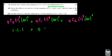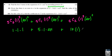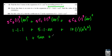5C1 is 5. 1 to the 4th is 1, times ax — because x to the 1 is just x. 5C2 is 10. 1 cubed is 1, times a squared x squared. So our first three terms are 1 plus 5ax plus 10a²x².